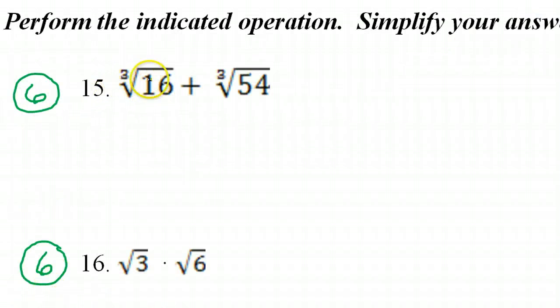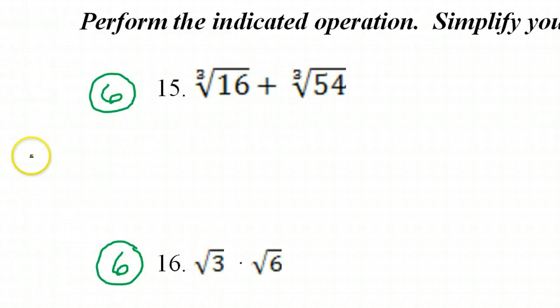All right, number 15 is all about those perfect cubes again. So remember, let's put a little chart off to the side. 2 to the third power is 8, 3 to the third power is 27, 4 to the third power is 64. These are perfect cubes.